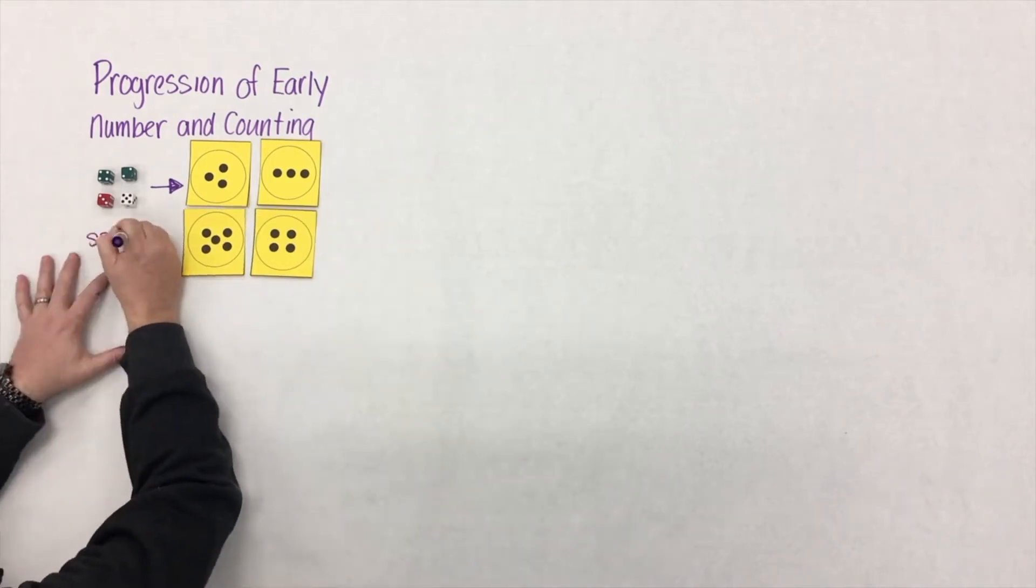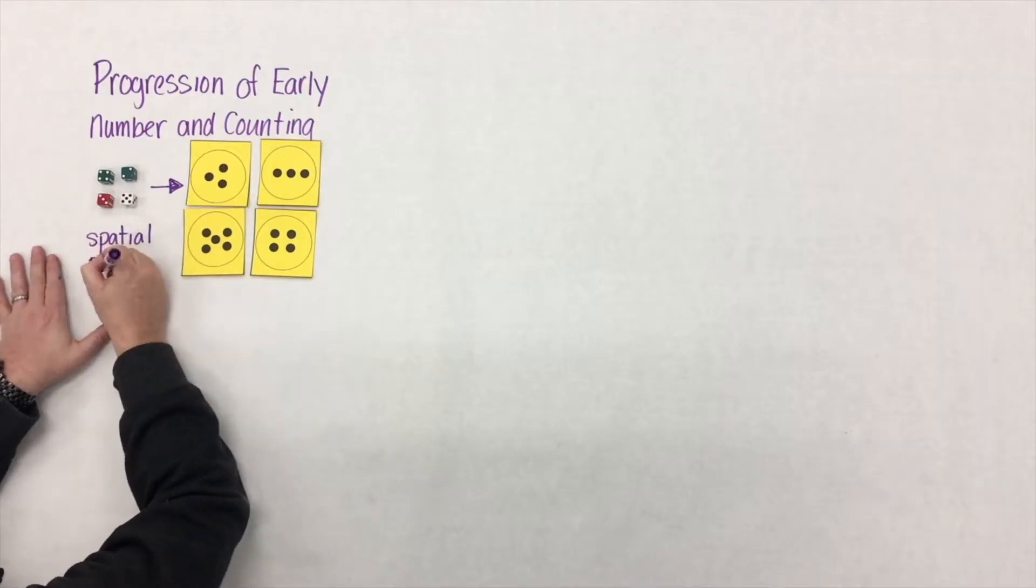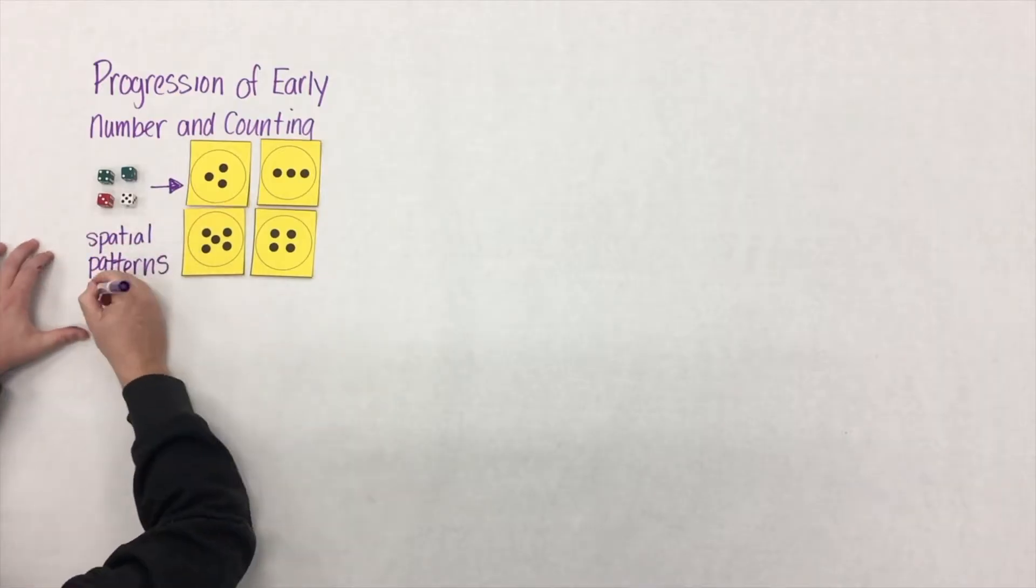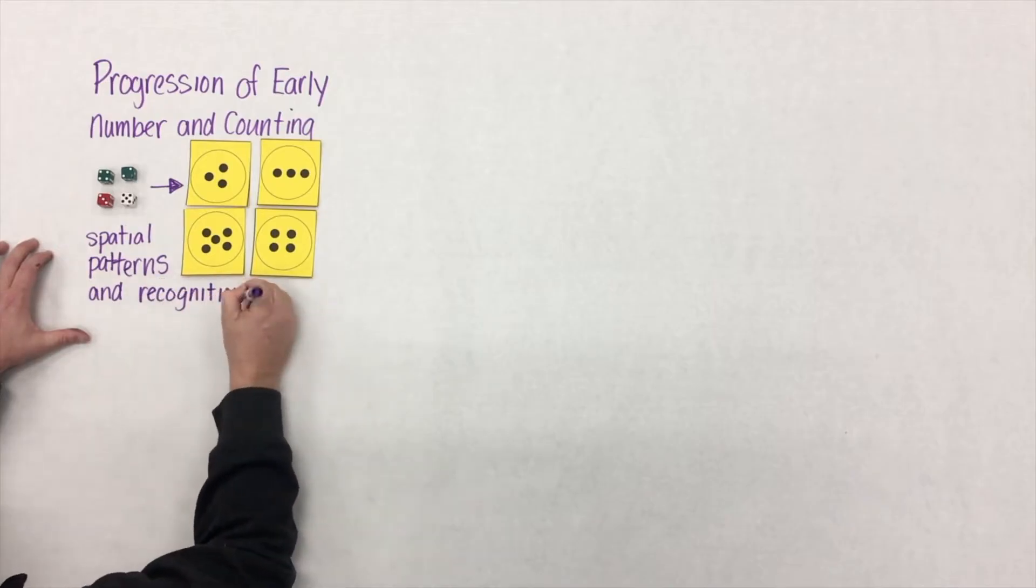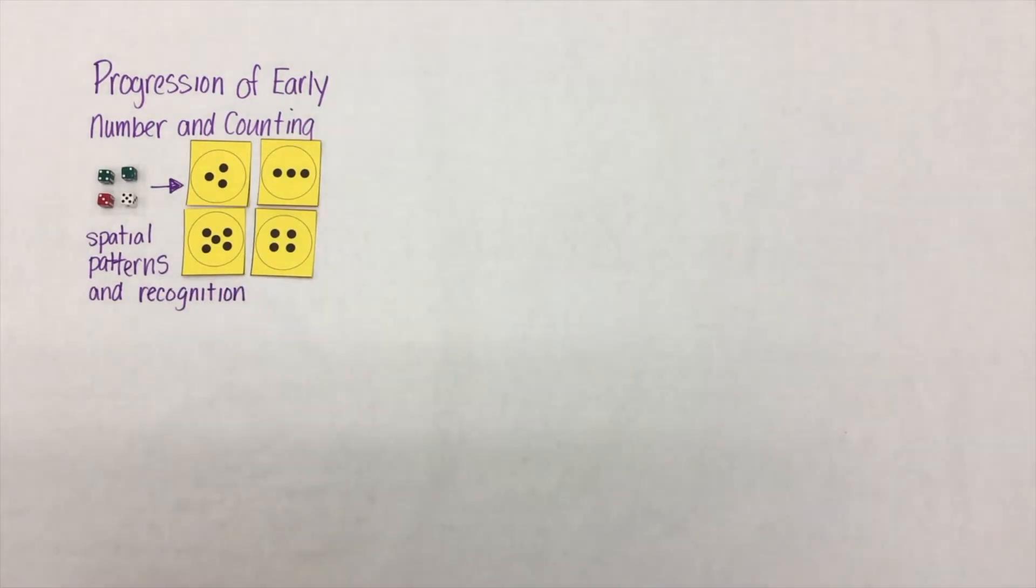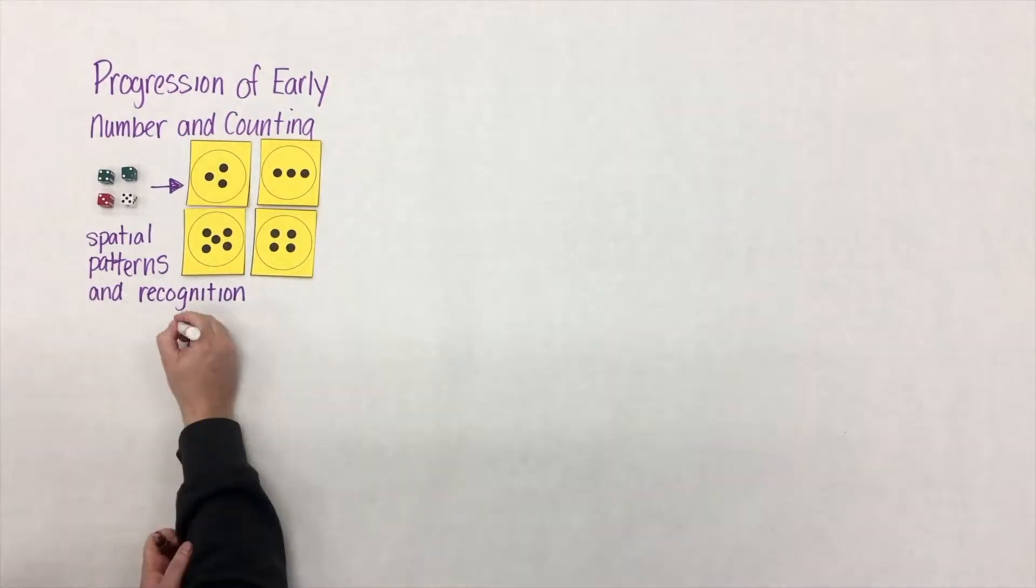They know that we have 3, 3, 5, and 4 on the yellow card. What they're doing is matching a number name to a visual pattern. This is a really big piece, but a lot of kids are able to do this before they come to us in kindergarten.